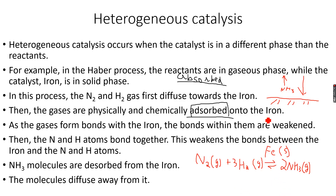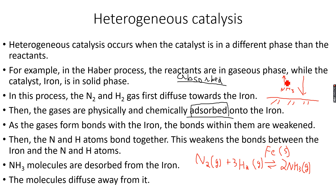This caused the bonds within the hydrogen and nitrogen molecules to weaken. As the bonds weakened, the nitrogen and hydrogen atoms bonded together, and as they bonded together the bonds they had initially formed with the iron started to weaken. So now we have NH3, which dissolves from the iron and diffuses away from it.